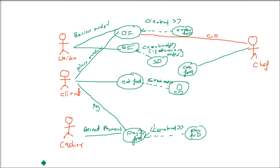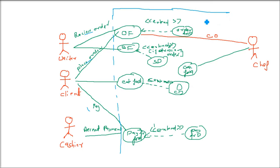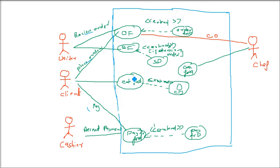This was a basic example without an include relationship, just for your understanding. One important thing remaining: always draw the system boundary. Any actor shown on the lines must be outside this boundary — you cannot have actors inside the boundary. The system boundary is drawn around the use cases, and actors remain external. This completes the restaurant use case scenario. Thank you.